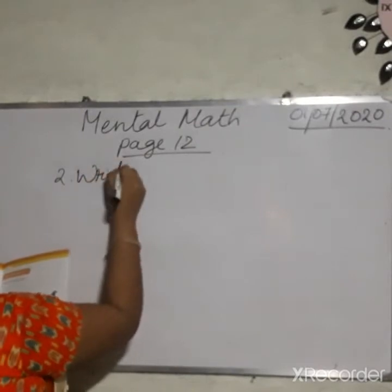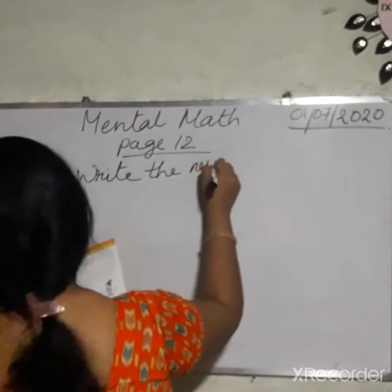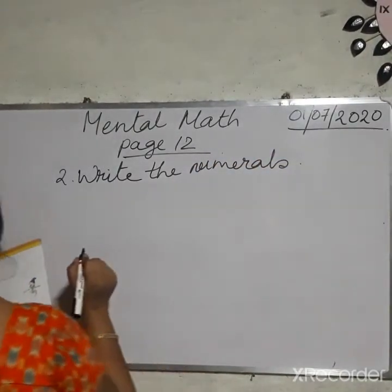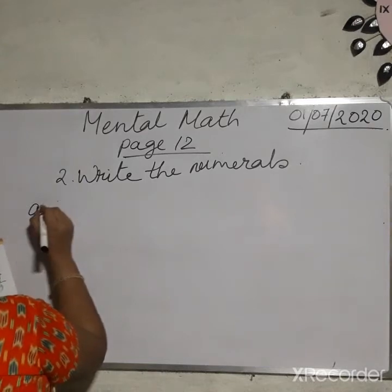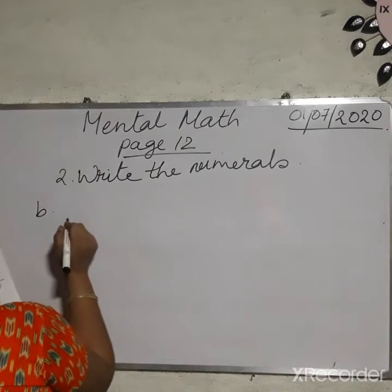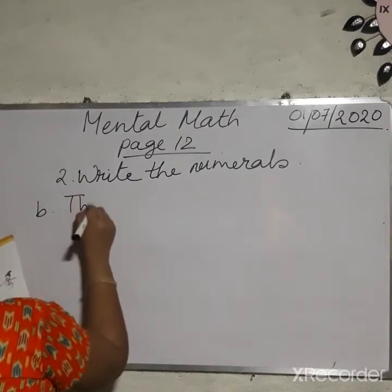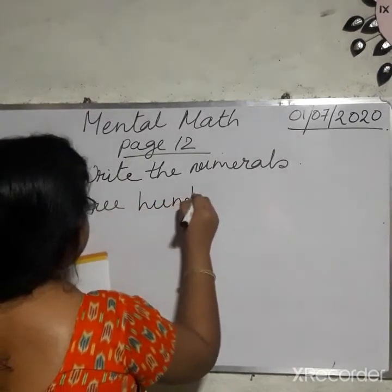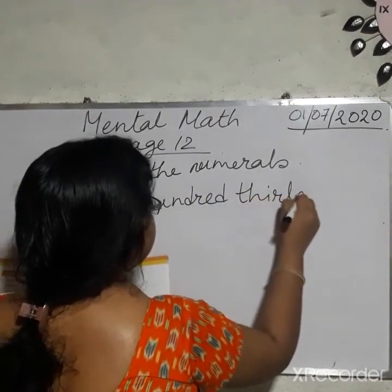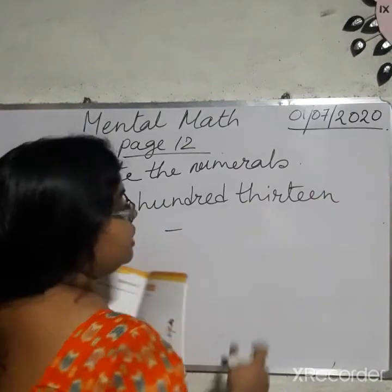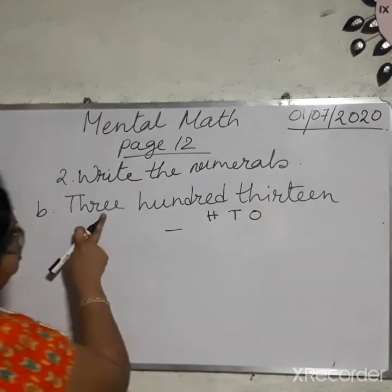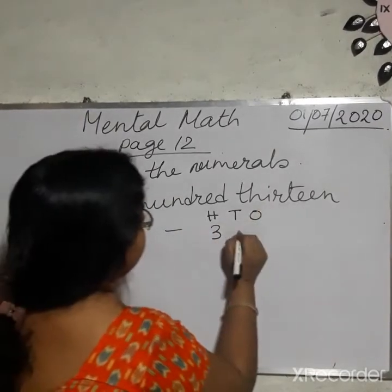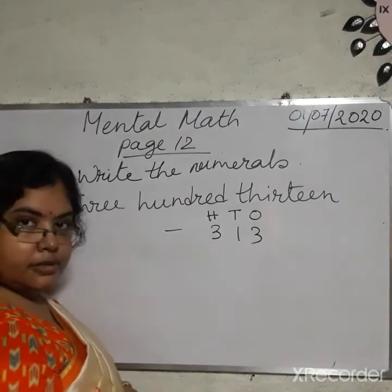Write the numerals. That means you have to write in figure. I am doing number B, and you will solve the remaining. 313. Here you have to write in figure. Children, write in this way: 1, 10, 100. 313.